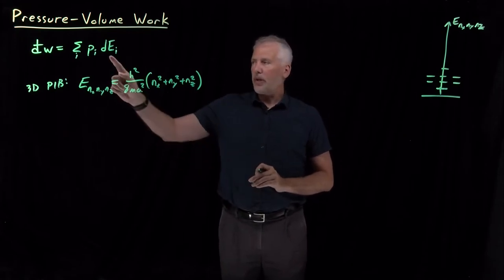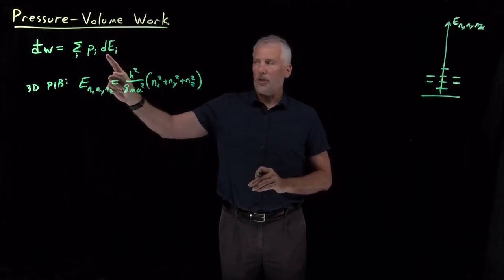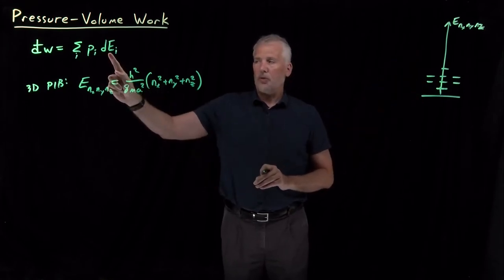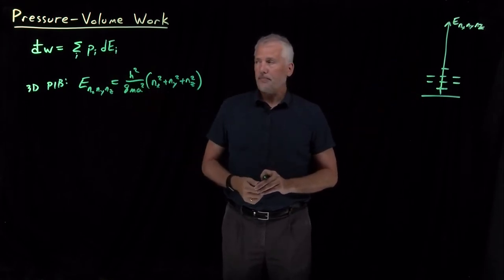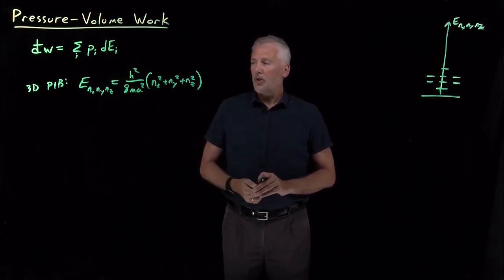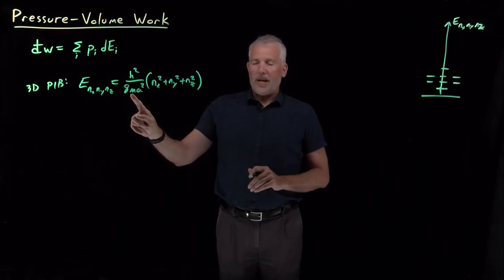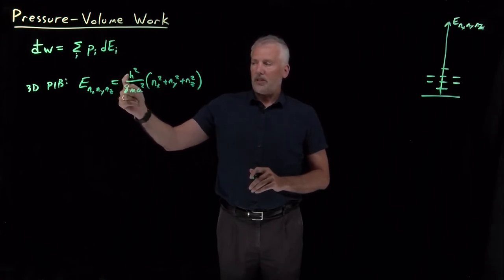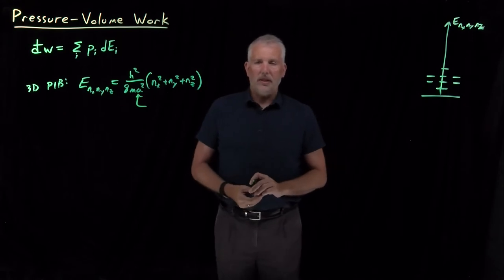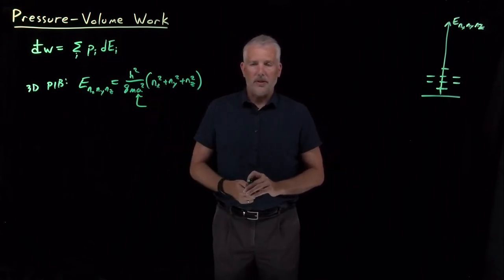So that's what the energies look like. And the question we have now is, how do I go about changing those energies? If I wanted to modify those energy levels, raise them or lower them in order to do work on the system, how do I do that without changing their occupation levels? So I can't change the mass of the particle. I can't change Planck's constant. I can, however, change the box length of the box that they're confined to.